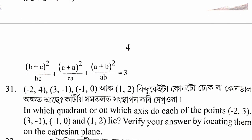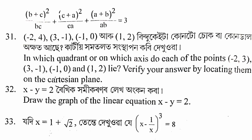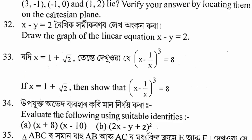Question: x equals 1 plus root 2. Find x minus 1 by x whole cube equals 8. We have exercise 2.5 or example 23.7. The question gives x equals 1 plus root 2, and from this we work out that x minus 1 by x whole cube equals 8. The question value is 1.5.